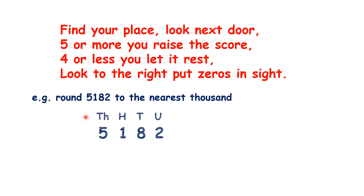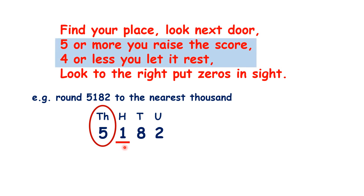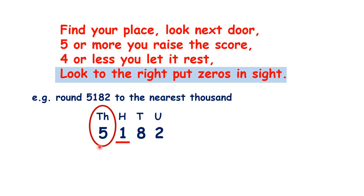So if we're rounding 5,182 to the nearest thousand, we find the place, which is our thousands, look next door at our hundreds, and because it's four or less — because it's only a one — we keep the thousands as it is and change all the digits to the right to zeros.